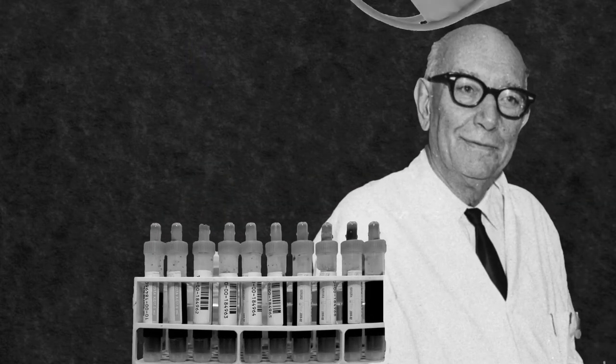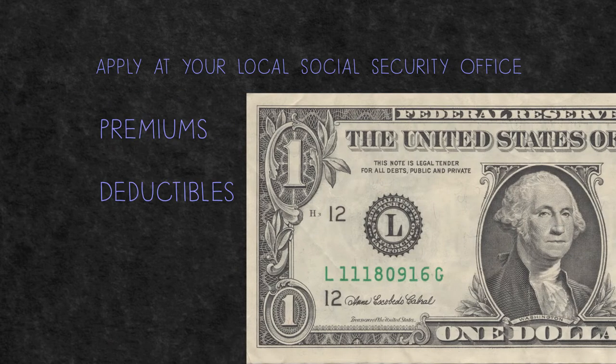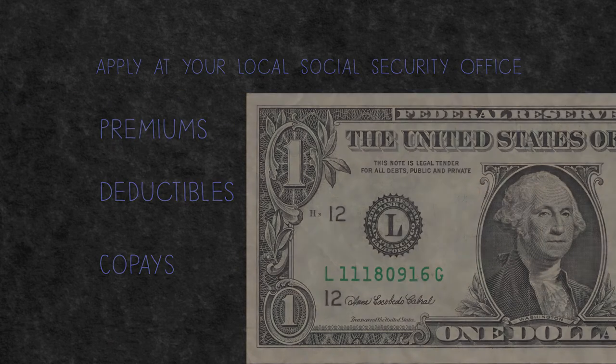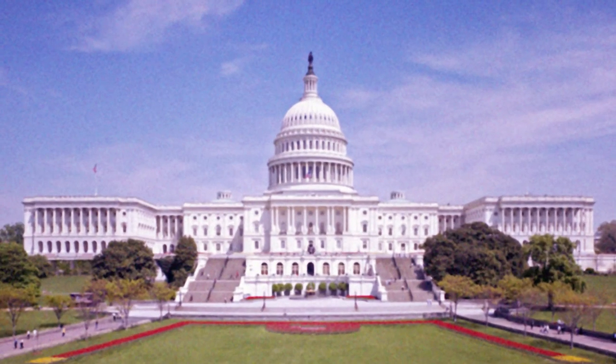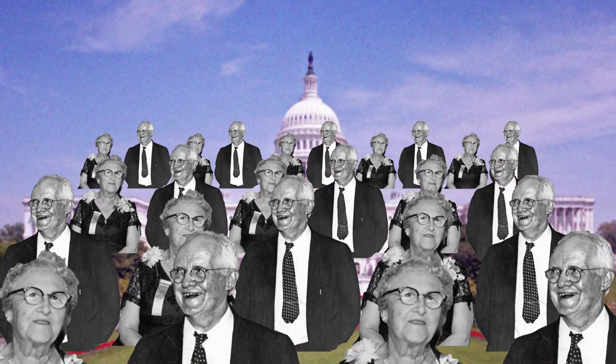Part B is coverage for your doctor visits, tests, and other everyday healthcare services. You can choose to enroll for Part B coverage and apply at your local Social Security office, but you'll have to pay for it through premiums, deductibles, and co-pays. Part B is paid for by the SMI Trust Fund, which is partially authorized by Congress, but also from the premiums of people enrolled in the program.